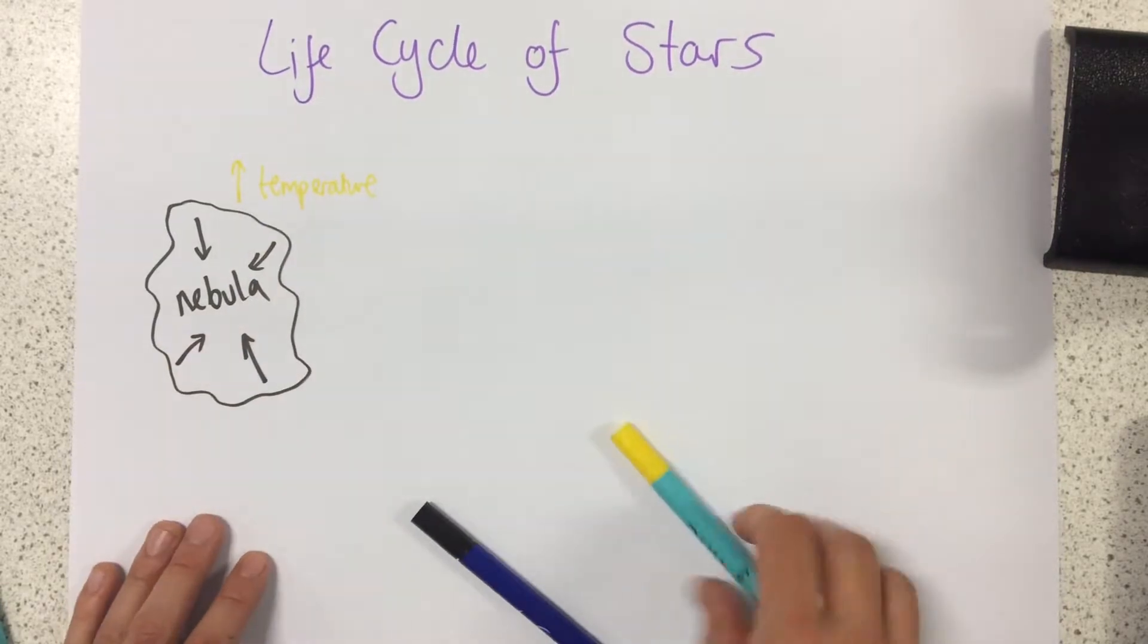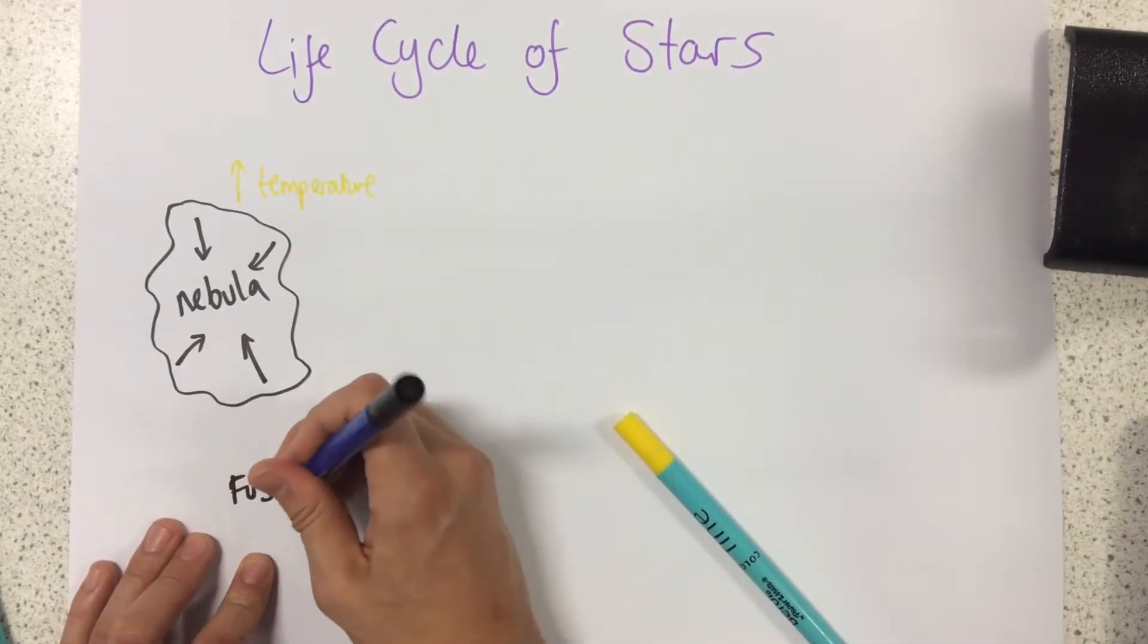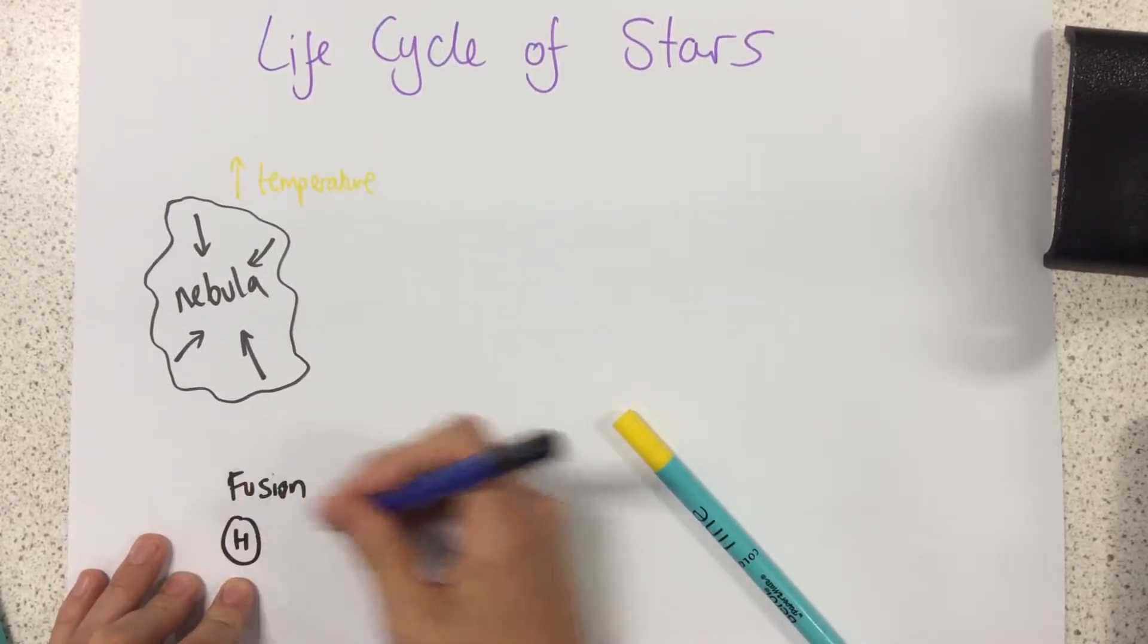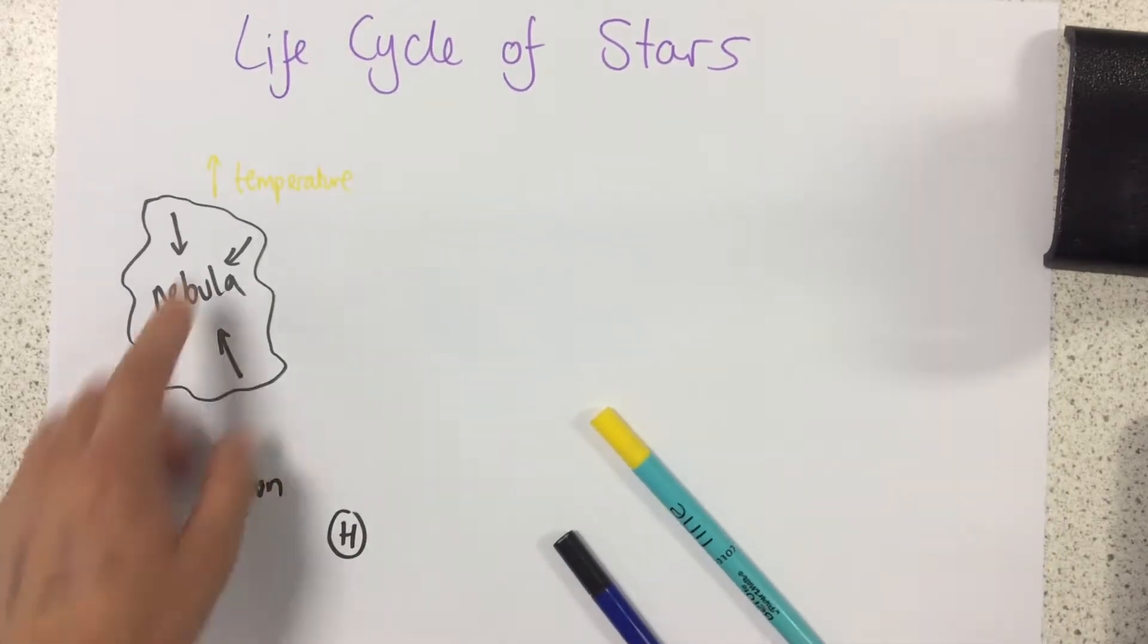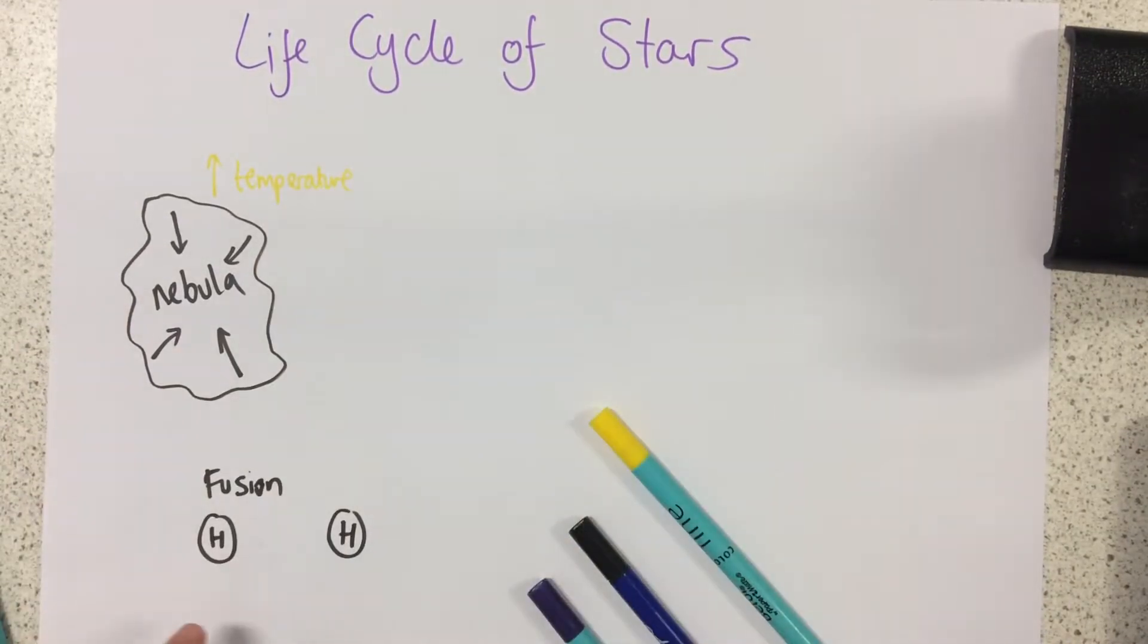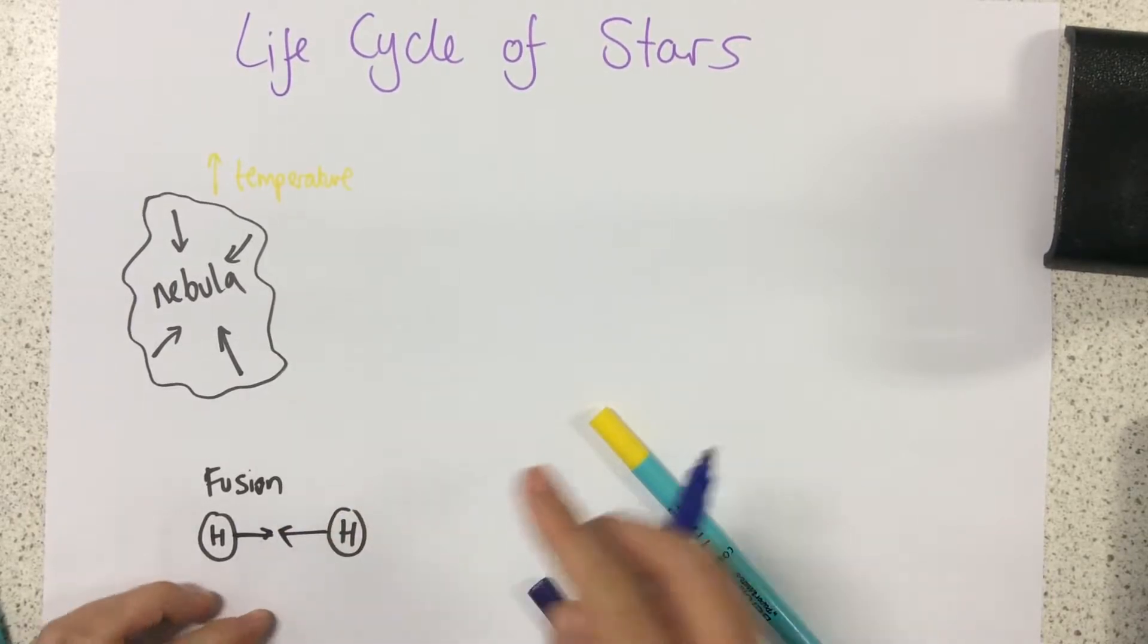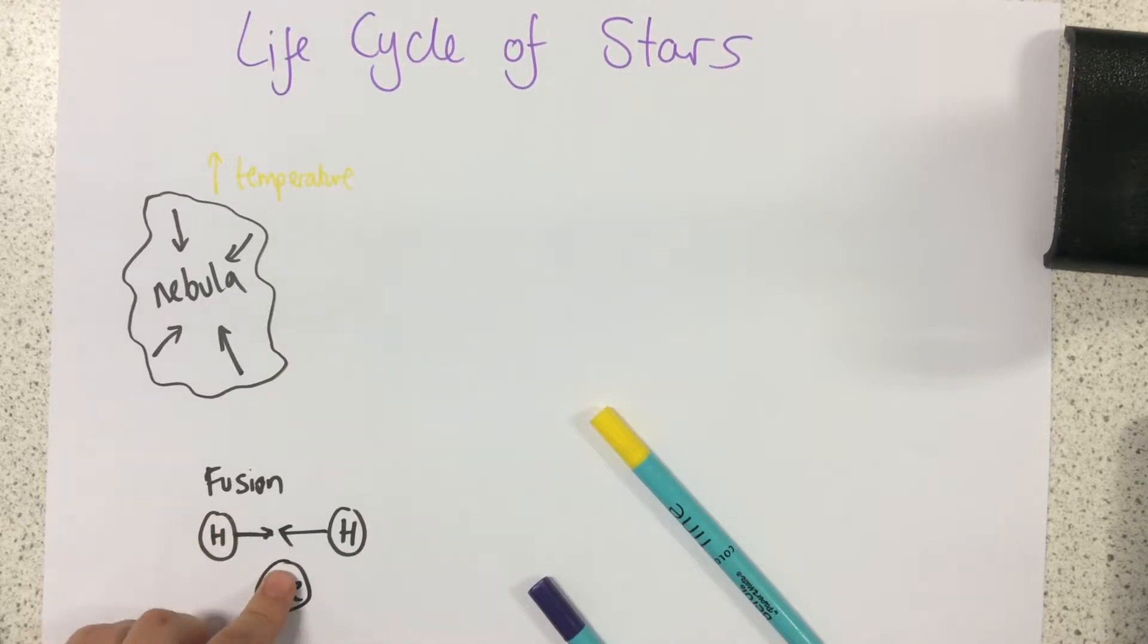When it gets sufficiently hot, we actually start to get fusion reactions occurring. Fusion is when we have hydrogen nuclei and when we have the right conditions of high temperature and pressure, there's enough energy to join these two hydrogen atoms together and fuse them to make helium. This is a fusion reaction.